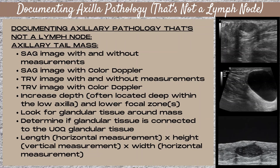To document images of a mass within the axillary tail tissue, you want to take a sagittal image with and without measurements, a sagittal image with color Doppler, a transverse image with and without measurements, and a transverse image with color Doppler. Since this tissue will be located deeper on the ultrasound image below the fat layer, you want to increase your depth and lower your focal zone.